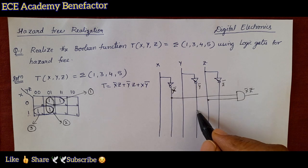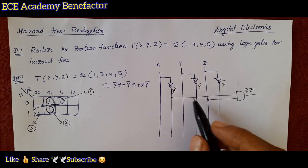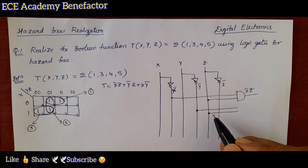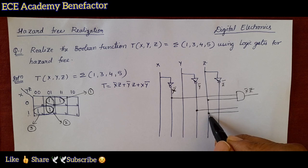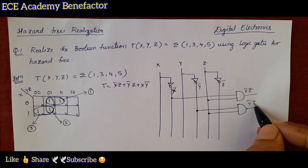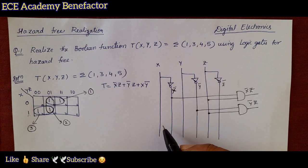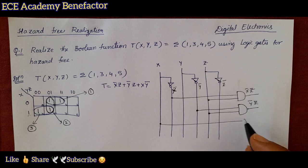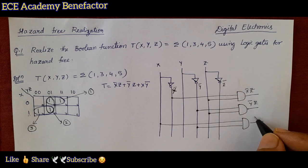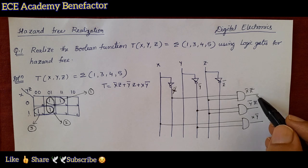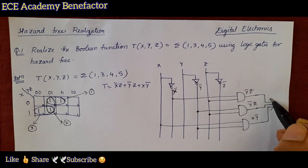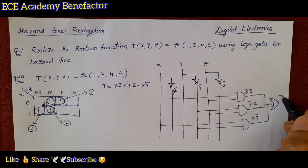The next term is ȳz. Connect ȳ and z to an AND gate — darken the connection point so it is clear which line is connected. This gives us the product term ȳz. Another term is xȳ: connect x and ȳ to an AND gate to get xȳ.